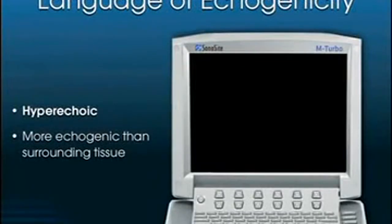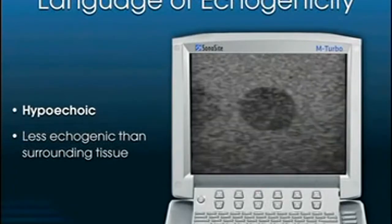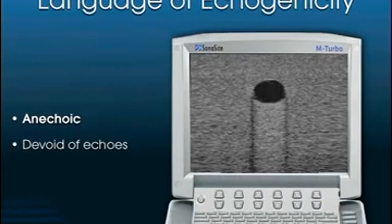The term for brightness in ultrasound is echogenic. A structure is hyperechoic if it is more echobright than the surrounding tissue. Something is hypoechoic if it is less echogenic than the surrounding tissue. Finally, something is anechoic when it is completely devoid of echoes and appears jet black compared to the surrounding tissue.